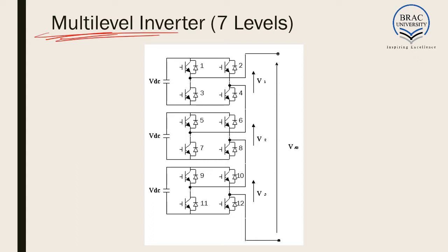Here we have presented an example of a seven-level inverter formed by three batteries. Each of the batteries has the same voltage VDC. If we remember, each of these three small parts is actually a full-bridge inverter. So we can see we have three full-bridge inverters in series.